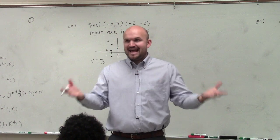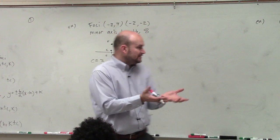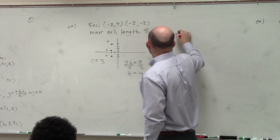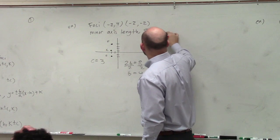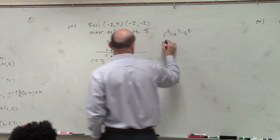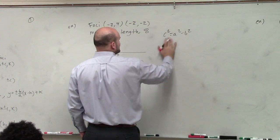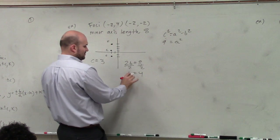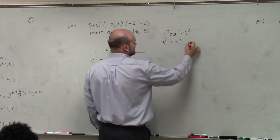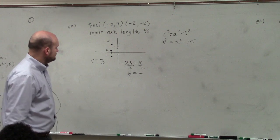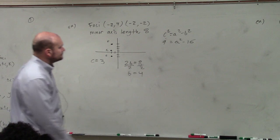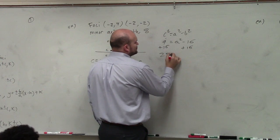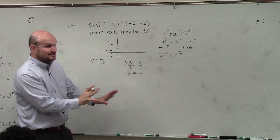Now, we need to figure out a because obviously we need to have an equation. So I need to have a squared and b squared. So I say a squared equals, I'm sorry, c squared equals a squared minus b squared. So c squared, which is 9, is equal to a squared, which I do not know, minus b squared, which is 16, add 16 to both sides. 25 equals a squared. And again, that's what I need is a squared.